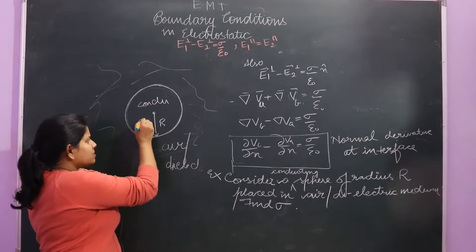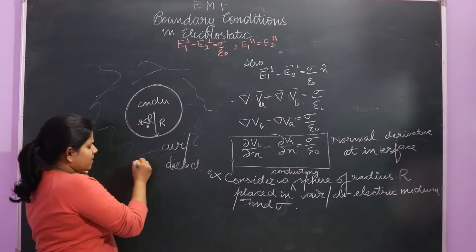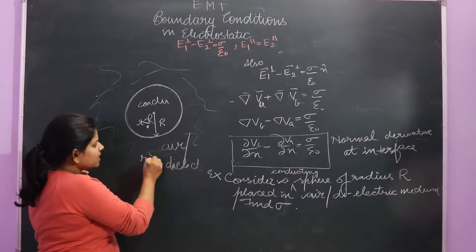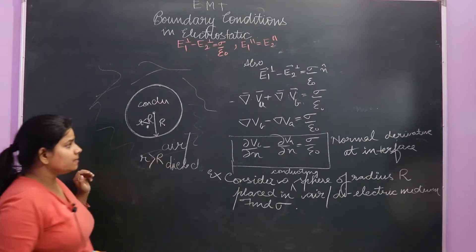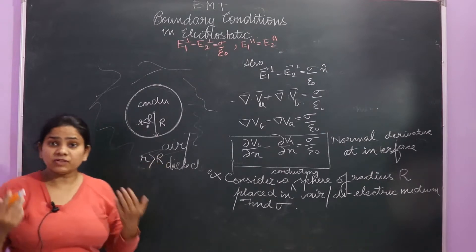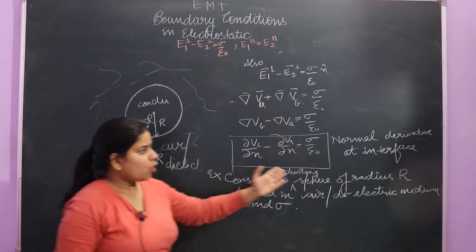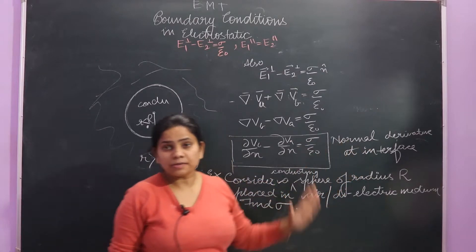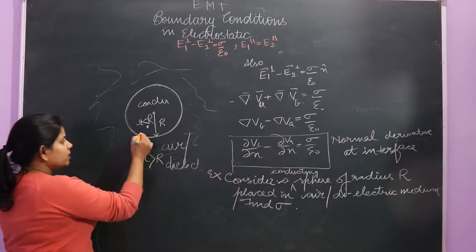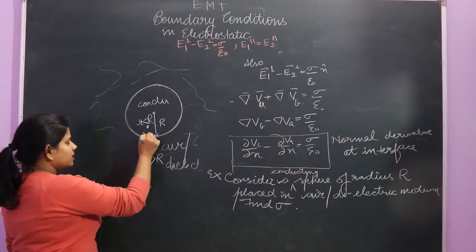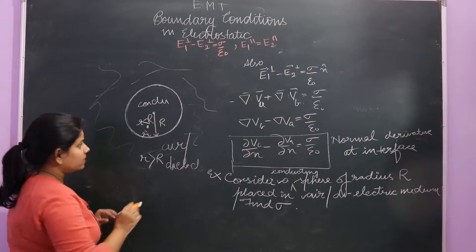When r is less than capital R, and when r is greater than R — we consider the normal derivative at the interface, which is along the unit vector r̂.